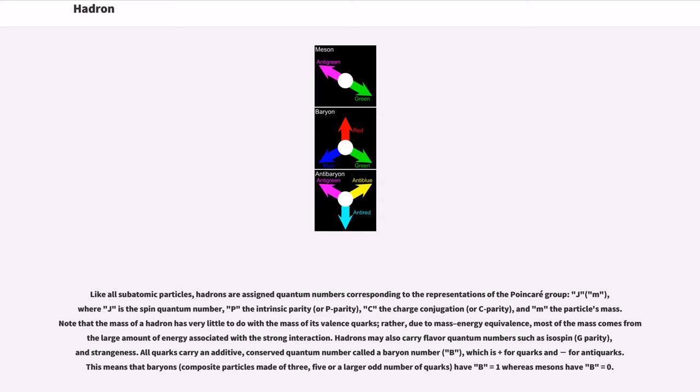Hadrons may also carry flavor quantum numbers such as isospin, G-parity, and strangeness. All quarks carry an additive conserved quantum number called baryon number (B), which is +1/3 for quarks and −1/3 for antiquarks. This means baryons (made of three, five, or a larger odd number of quarks) have B = 1, whereas mesons have B = 0.